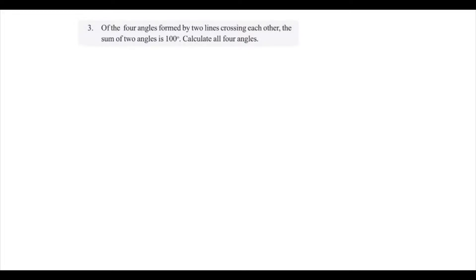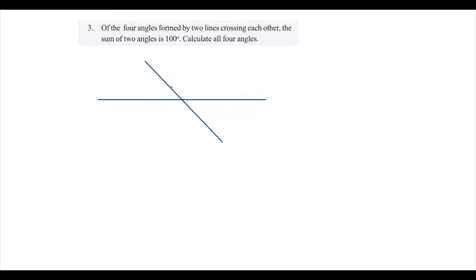For this question, four angles are formed by two lines crossing each other, and the sum of two of the angles is 100. We need to calculate all four angles. First, draw the diagram. We put one angle as x and the opposite angle as 100 minus x, since the sum of these two angles is 100. Since x and 100 minus x are opposite angles, x equals 100 minus x.